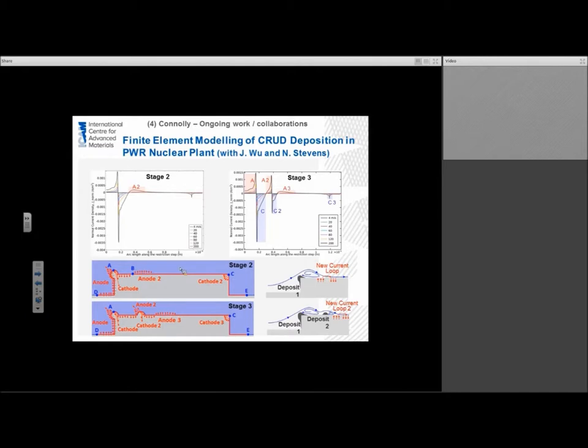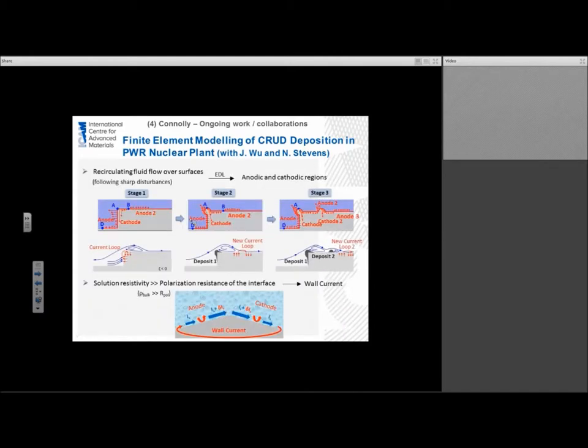These sites where we get deposition are, in effect, galvanic couples. If we take a look at the normal current density along the restriction step, we see a very high anodic spot just at the mouth of the restriction, followed by a cathodic section, and then another anodic section. This isn't a case where we're just getting deposition at the mouth, but if we put another deposition spot down the restriction, we generate another anodic spot. Once we get one piece of deposition, we will always get this ripple effect going down the material.